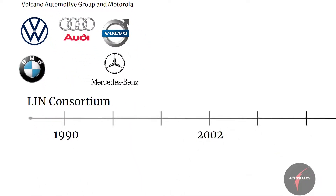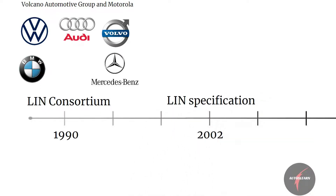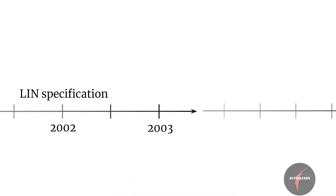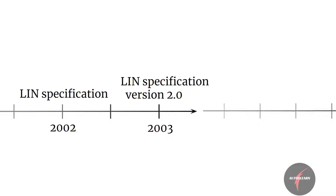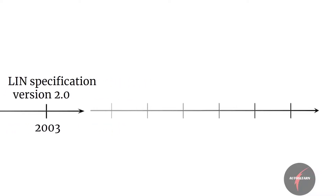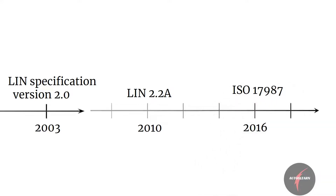Then in November 2002, a fully implemented version of the new LIN specification was published. In September 2003, version 2.0 was introduced to expand capabilities and make provision for additional diagnostic features. In 2010, LIN 2.2a was released, which is the currently used version. Then in 2016, CAN in Automation standardized LIN as an ISO standard with ISO 17987.